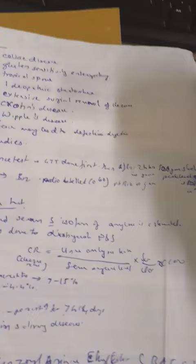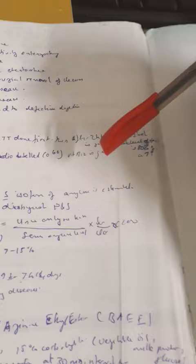Then Schilling test - radioactive cobalt is given to the patient because B12 contains cobalt, and then estimation of this part.